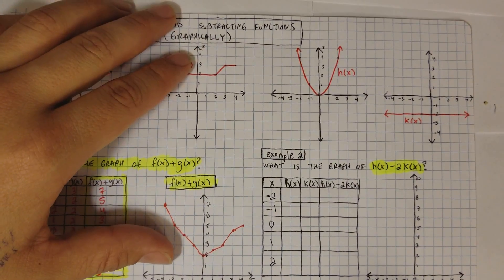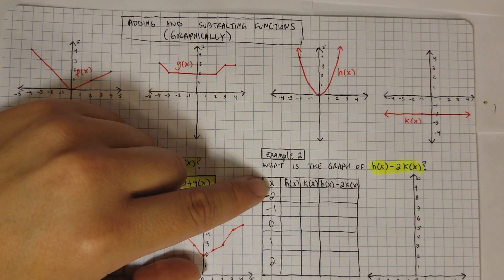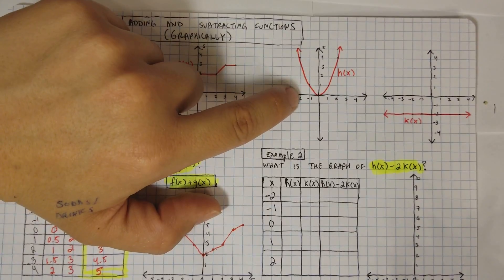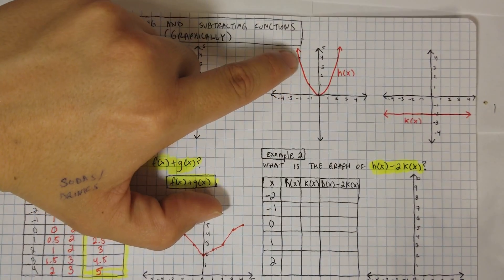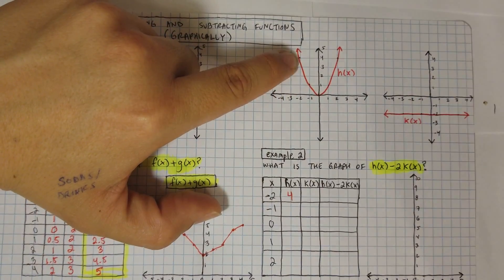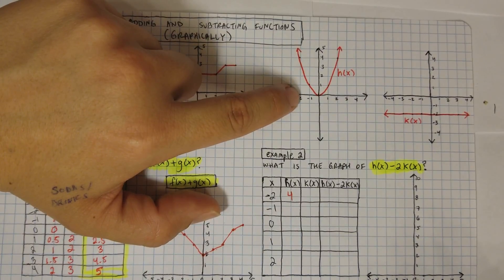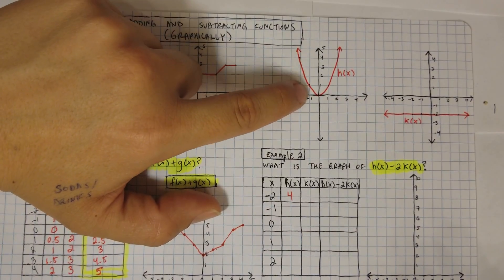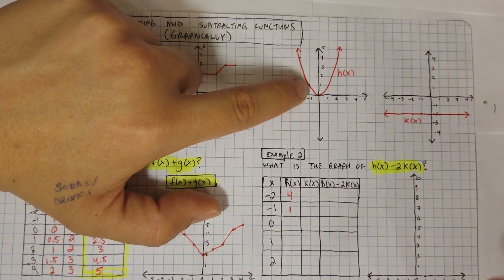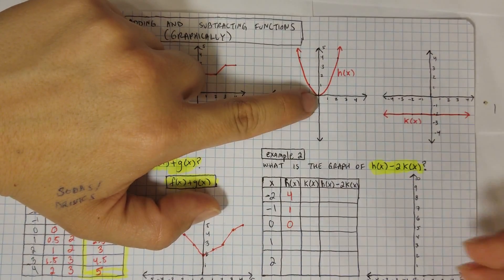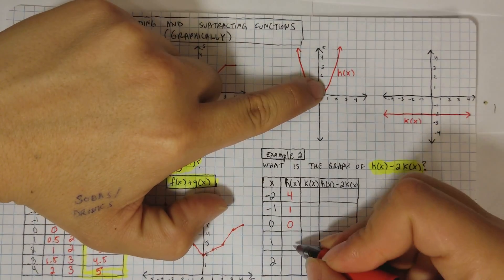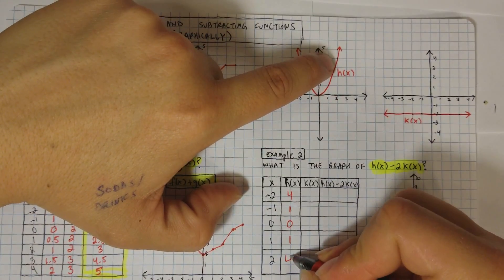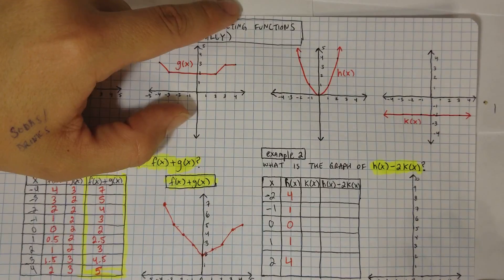Let's look at the graph to see what the values are. At negative 2 for h(x), my value is 4. At negative 1, my value is 1. At 0, my value is 0. At 1, my value is 1 again — it goes back up. At 2, my value is 4. And I'm done with the h(x) column.